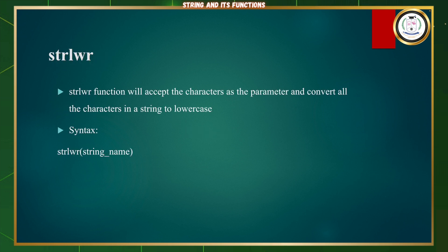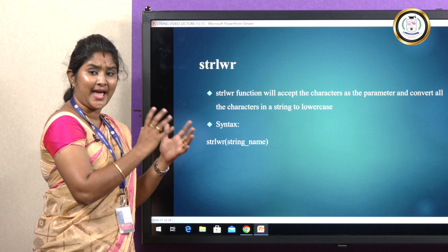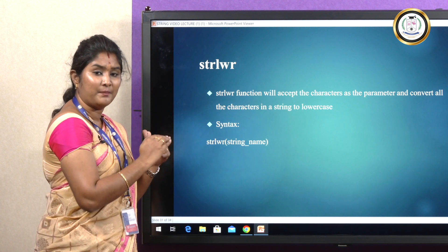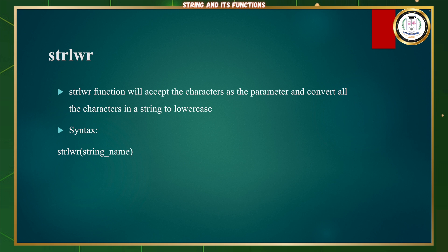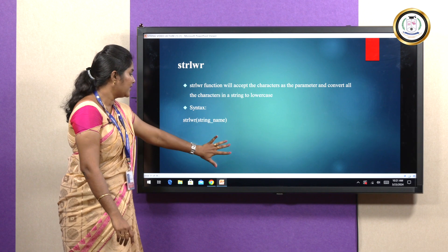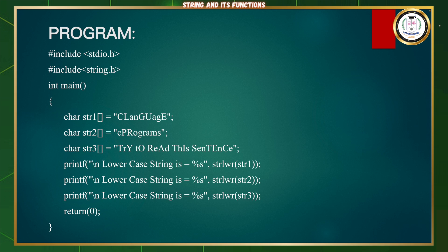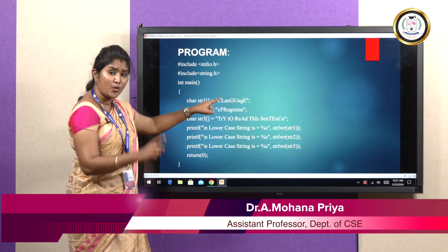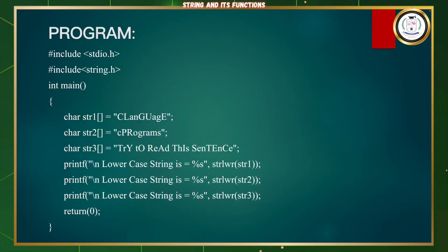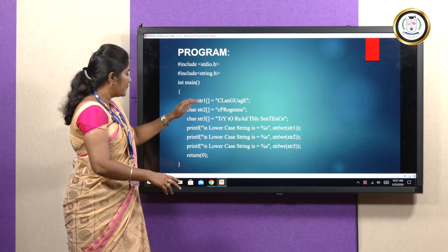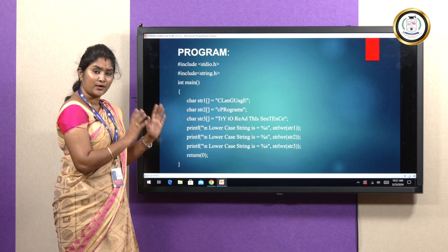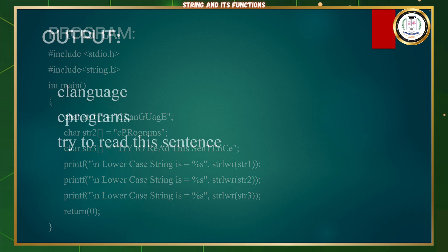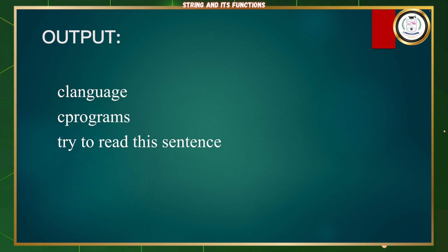strlwr: this function is used to convert a given string into lowercase. The input can include both uppercase and lowercase characters, but the output will be entirely in lowercase. The syntax is strlwr(string_name). In the example, we have three strings — str1, str2, and str3 — containing both uppercase and lowercase letters. After applying strlwr, all characters are converted to lowercase. Thank you.